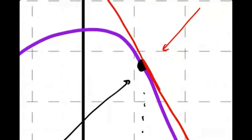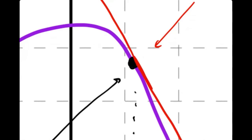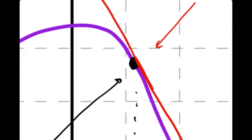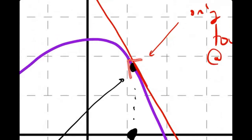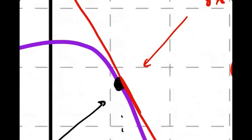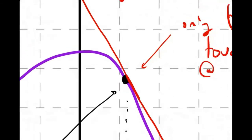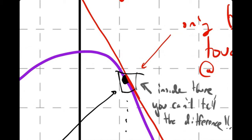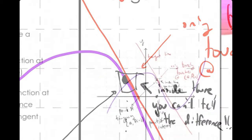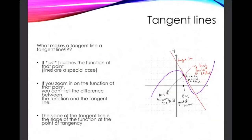Another thing that I think is so special — something I really want you to internalize — is this zooming property. If I zoom in on the curve inside of this little window right here, inside of there you can't tell the difference. The tangent line basically is the curve inside a really small window. So I have two special properties: it just touches, and if you zoom in you can't tell the difference.